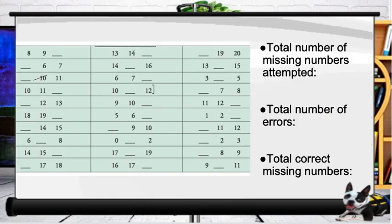In this example, we have blanks for the student. In the third row, the student has an error in the first column — they missed the 10, so there's a slash through it. There are no additional errors. A bracket appears after the number 12 in the middle column of the fourth row because that's where the student stopped at the timer. We calculate total missing numbers attempted, total errors, and total correct missing numbers.